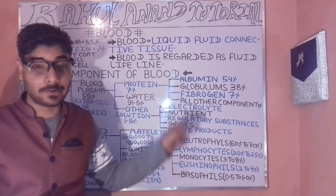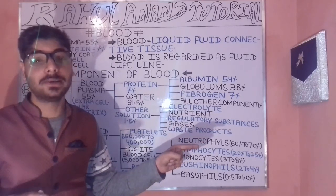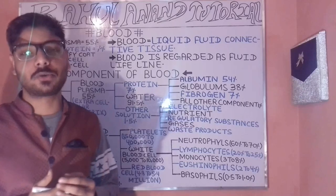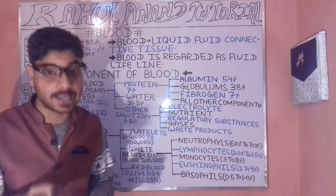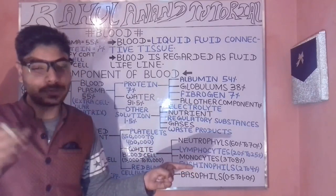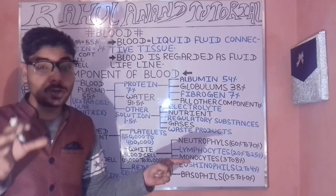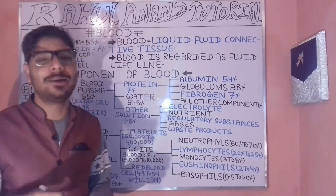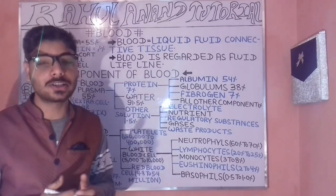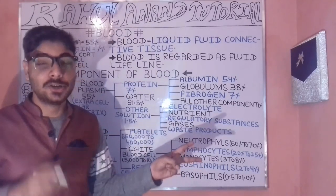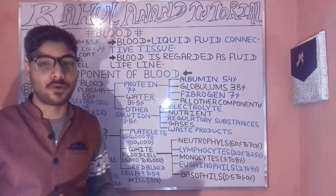Blood constitutes around 8 percent of the body weight. For example, if body weight is 80 kg, then 8 percent of that equals the blood weight. Blood composition is divided into two broad categories: plasma and formed elements.